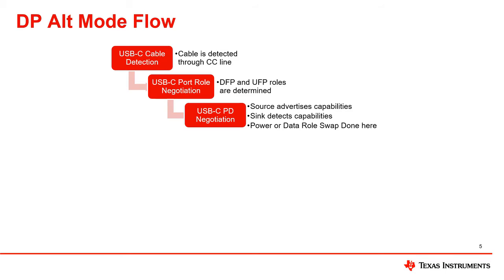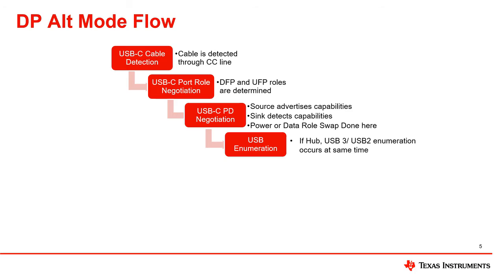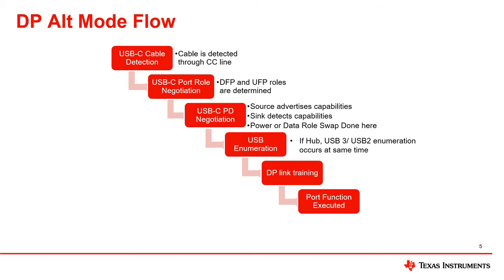After this, USB enumeration will begin. If connecting to a hub, both USB 3 and USB 2 enumeration will be done at the same time. At this point, if DP alt mode negotiation has been completed, then DP link training will begin to enable the DP link. After this, USB and DP channels are ready for data and video transfer over Type-C.